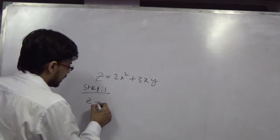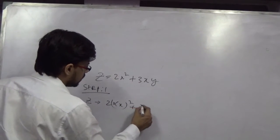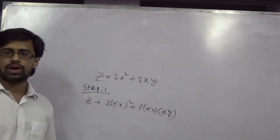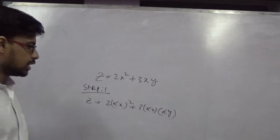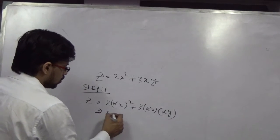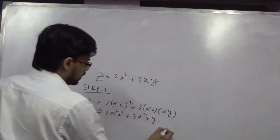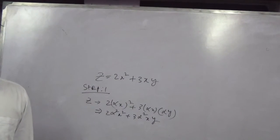So z becomes 2 alpha x squared, 3 alpha x into alpha y. So at the end you get 2 alpha square x squared and 3 alpha square xy.